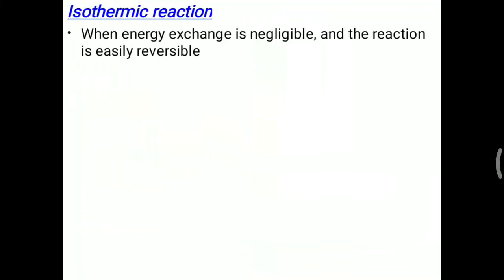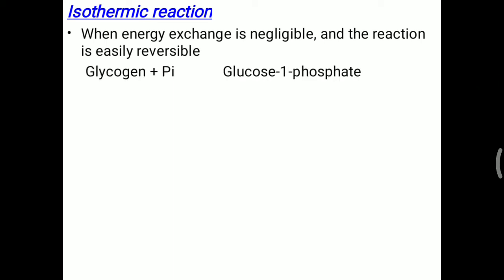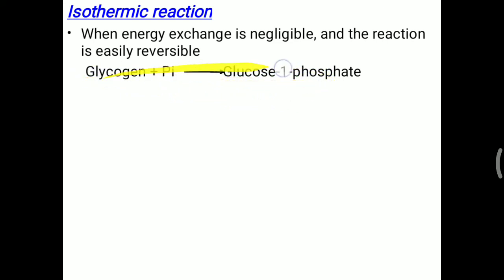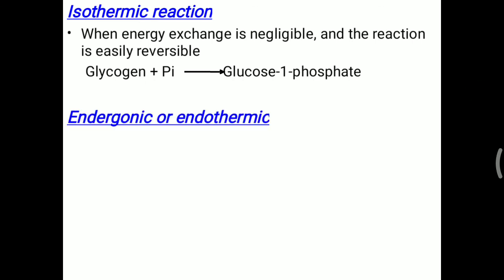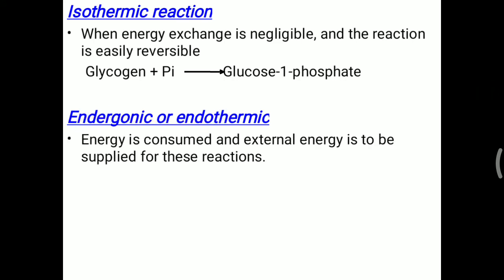Another type is isothermic reaction — 'iso' meaning equilibrium. Here the energy exchange is negligible and the reaction is easily reversible. For example, glycogen plus phosphate releases glucose-1-phosphate, and similarly glucose can be added back to the glycogen molecule. During this reaction, not much energy is exchanged, so it is called an isothermic reaction.